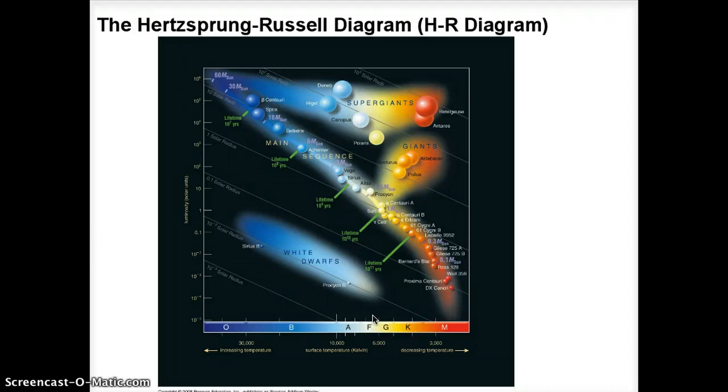This is something called the Hertzsprung-Russell diagram or the HR diagram for short. It's a graph with on the y-axis the luminosity of the star and on the x-axis the spectral type or the temperature of the star. This particular version is from your textbook.